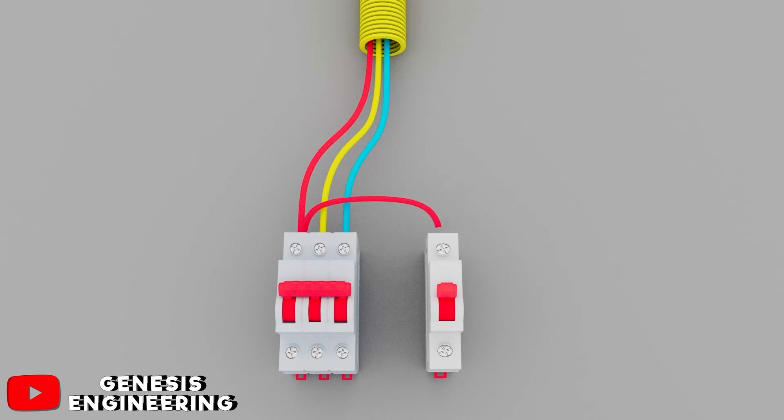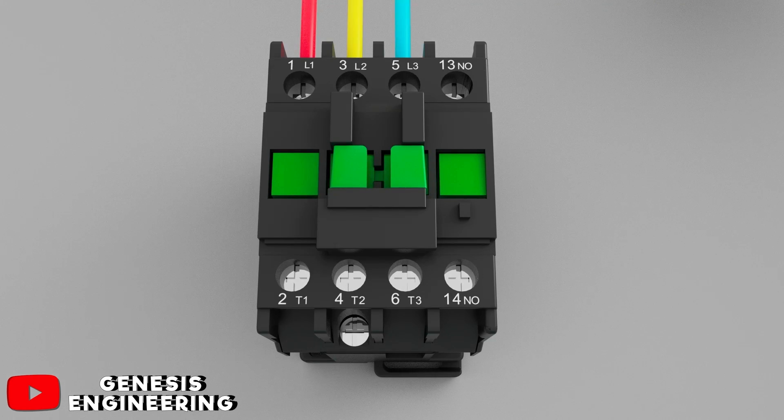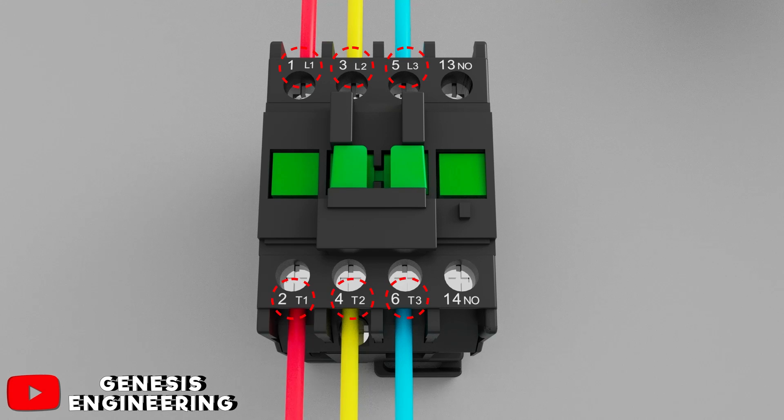Making a contactor connection, we start with the power circuit, connecting the three-phase conductors to the three-phase general circuit breaker and then we leave with the three conductors and connect to terminals 1, 3 and 5 of the contactor, and contacts 2, 4 and 6 we connect on the motor.